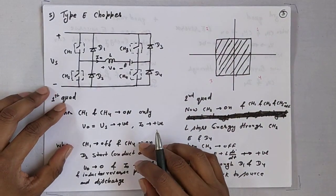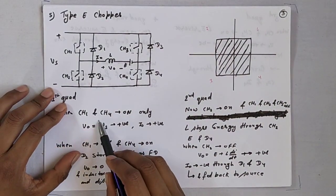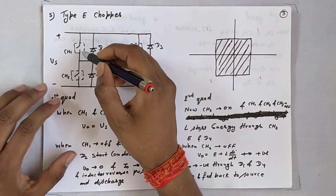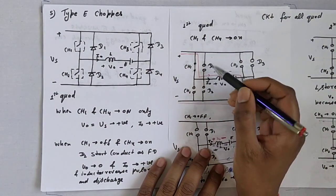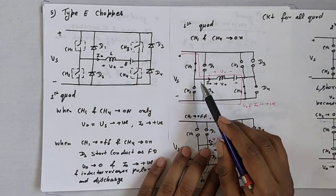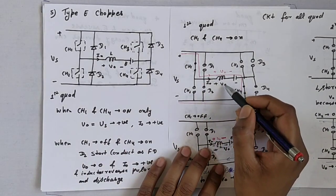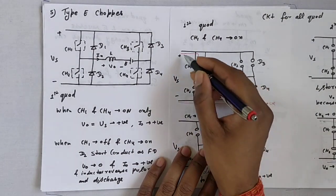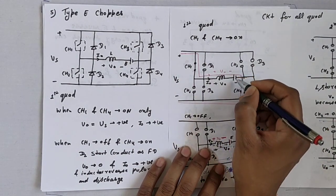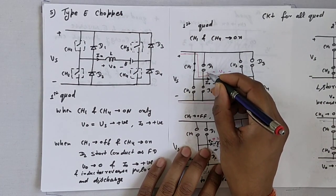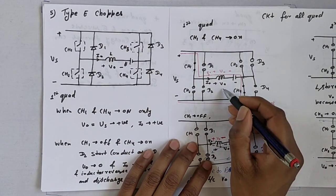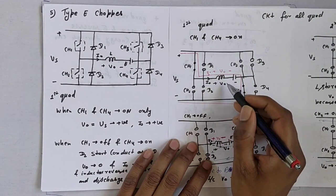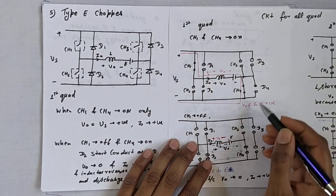In the first quadrant, CH1 and CH4 are on only. Let's see the circuit diagram. When CH1 and CH4 are on, V0 equals VS. In this direction, the polarity across the load will be such that V0 and I0 are both positive, as per the conventional reference direction taken for V0 and I0.